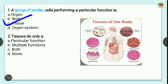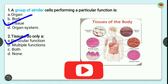Question number 2: tissues perform only — options are particular function, multiple function, both, or none. Tissue is a group of similar cells performing a particular function, so the correct option is A, particular function. There are many types of tissues like connective tissue, nervous tissue, smooth muscles, and epithelial tissue, each performing a particular function. For example, nervous tissue makes coordination in our body.